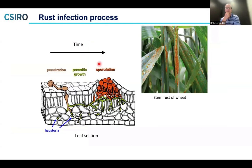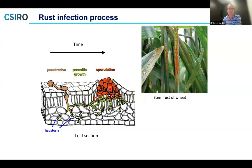I'll introduce a little of the biology of the rust fungus and the infection process. It's spread through airborne spores. When a spore lands on the leaf surface, it germinates a tube and grows into the leaf through natural openings called stomates. The hyphae can grow through leaf tissue and form structures called haustoria, which are actually inside the host plant cell. Eventually it differentiates and erupts in a pustule — the visible signs of infection — releasing new spores for reinfection.